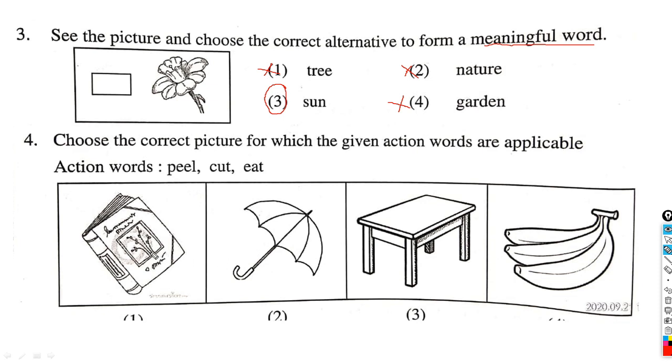Book ko hum kaat nahi sakte, khaa nahi sakte. Umbrella ko hum khaa nahi sakte. Table ko hum khaa nahi sakte. Hum kya khaa sakte hai? Hum banana khaa sakte hai. So the right option is fourth. Hum ise kaat bhi sakte hai, iske upar skin bhi hai, aur ise hum khaa bhi sakte hai.